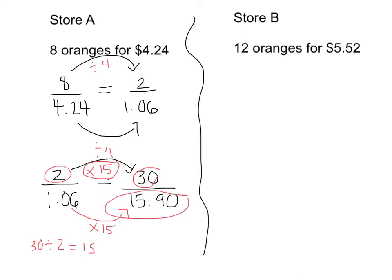We're going to do the same thing with store B, and we're going to use our common factor of 2 to help us get to 30. So once again, we're writing this as a proportional relationship using equivalent ratios. So for every 12 oranges, it costs $5.52. So how much would it cost for 2 oranges?